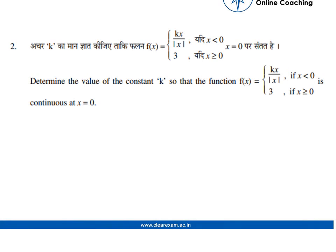Hello everyone. The question is that we need to determine the value of the constant k so that the function f(x) equals kx divided by mod x if x is less than 0, and 3 if x is greater than or equal to 0, is continuous at x equals 0.